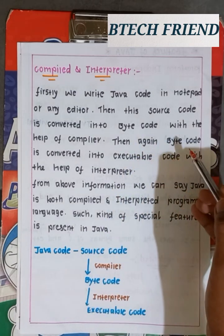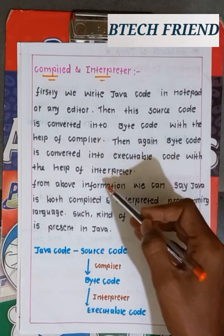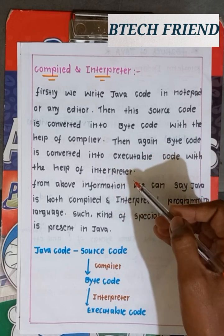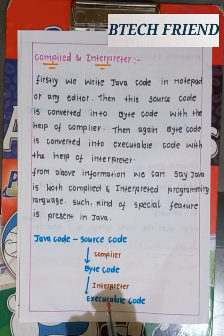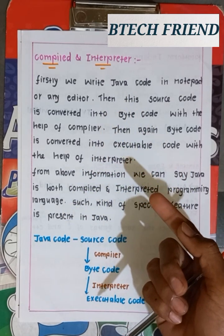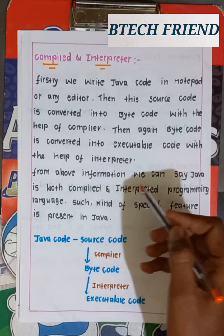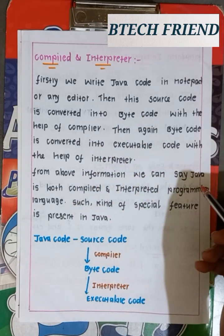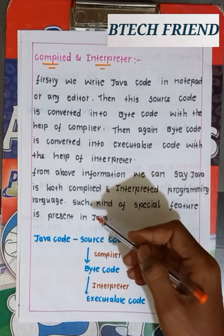Then the bytecode is converted to executable code with the help of an interpreter. We use both a Java compiler and interpreter. From this, we can say Java is a compiled and interpreted programming language.